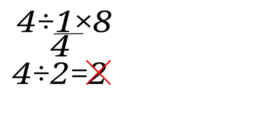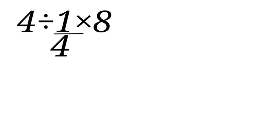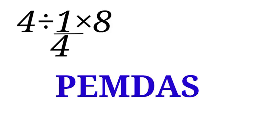Now let us follow the order of operation to solve it correctly. We will be using PEMDAS. P is for parenthesis, E is for exponent, M is for multiplication, D is for division, A is for addition, and S is for subtraction.